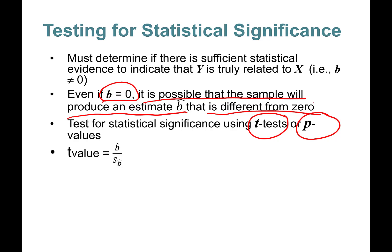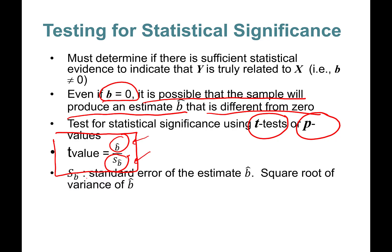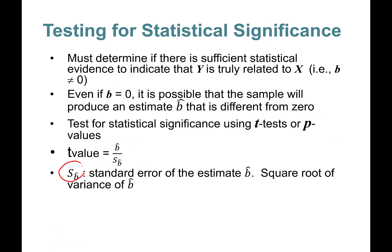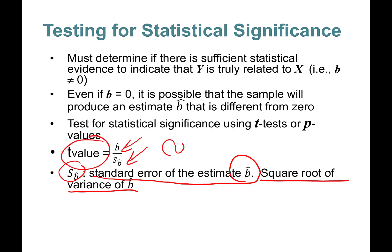To calculate the t-value, you grab the parameter estimate beta-hat and divide it by the standard error of beta-hat, denoted s_b-hat. The standard error is the square root of the variance of beta-hat. Calculating these manually is beyond the scope of our class. All you need to know is how to calculate the t-value and then compare it against the t-table critical value.